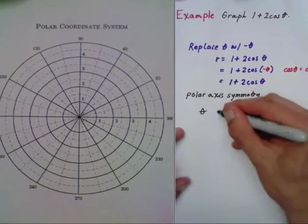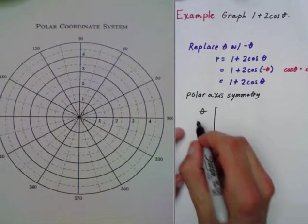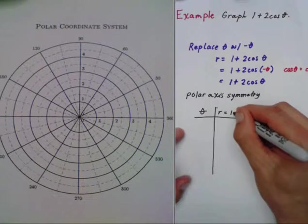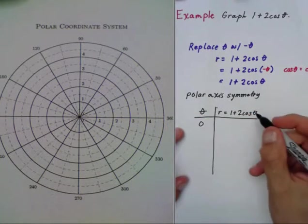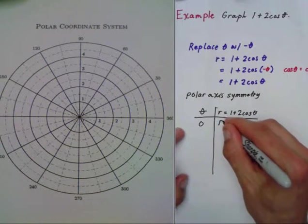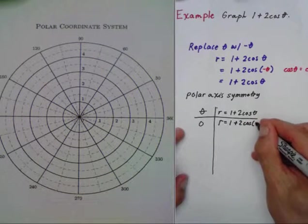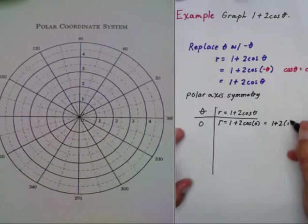Let's look at plotting some of these points. Remember, we get to pick theta. The most common thing to do is multiples of pi over six. So we have r equals one plus two cosine theta. I start at zero, so r equals one plus two times cosine of zero, which equals one plus two times one.